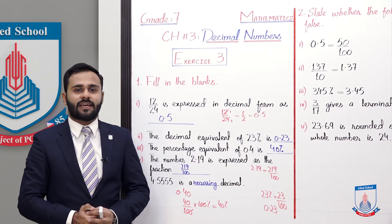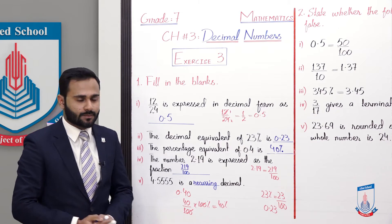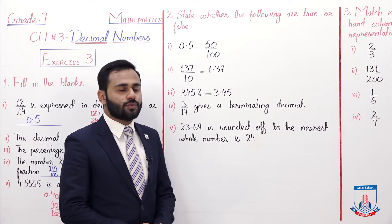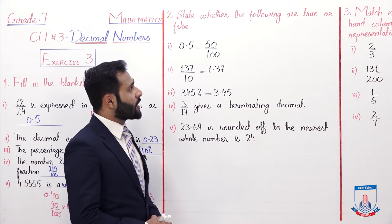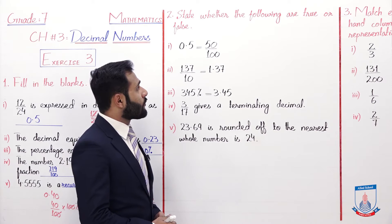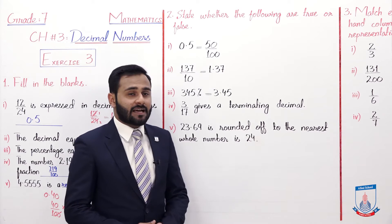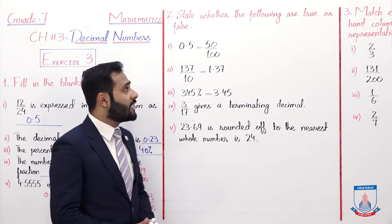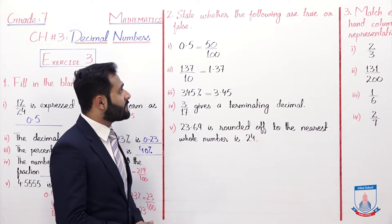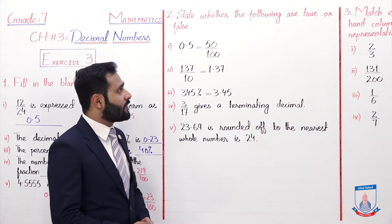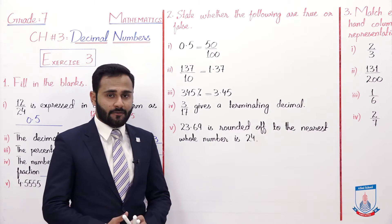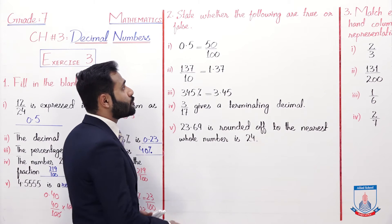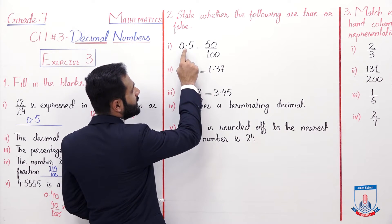I hope Question 1 is understood. Now let's solve Question 2: State whether the following are true or false. The first statement: 0.5 equals 50/100. Yes, this is true, because moving the point two digits forward gives 50/100.